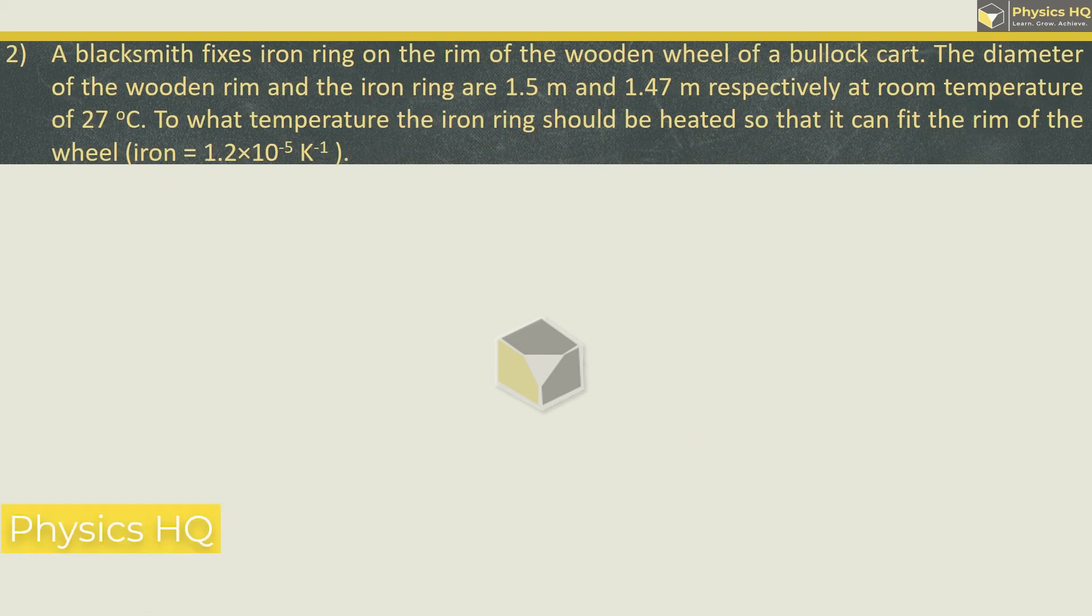Next we will see. A blacksmith fixes iron ring on the rim of the wooden wheel of a bullock cart. The diameter of the wooden rim and the iron ring is 1.5 meters and 1.47 meters respectively at room temperature 27 degrees Celsius. To what temperature the iron ring must be heated so that it can fit the rim of the wheel. Iron alpha value is given over here as 1.2 into 10 raised to minus 5. So let's write the formula. Alpha is L2 minus L1 upon L1 times T2 minus T1.